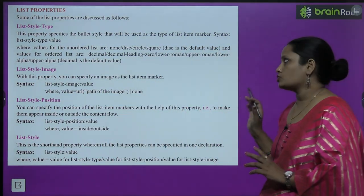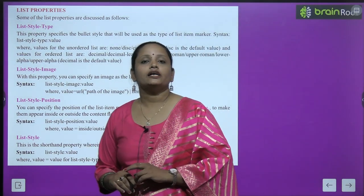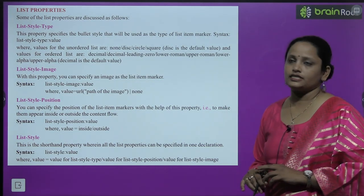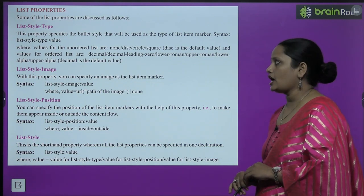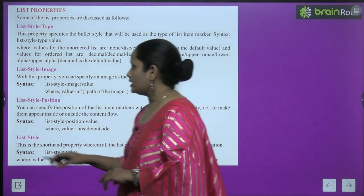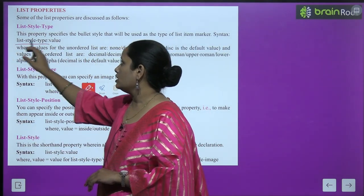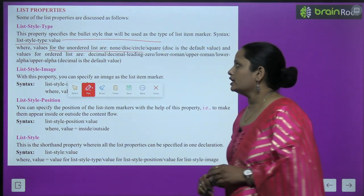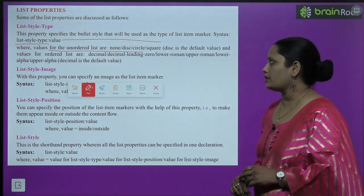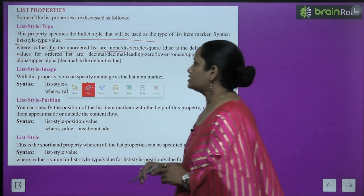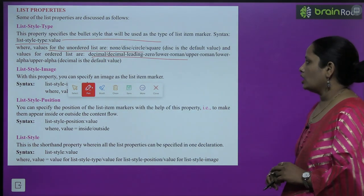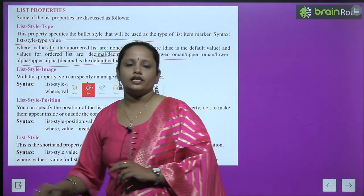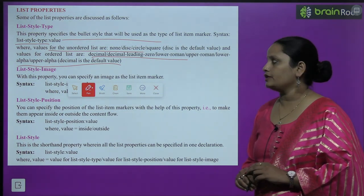Now let's learn about list properties. Some common properties are discussed below. First is list-style-type. This property specifies the bullet style that will be used as a type of list item marker. Syntax: list-style-type: value. This tells what kind of bullet will be used. Values for an unordered list are: none, disc, circle, square. Values for ordered list are: decimal, decimal-leading-zero, lower-roman, upper-roman, lower-alpha, upper-alpha.